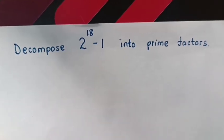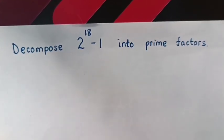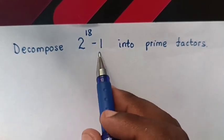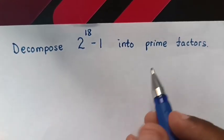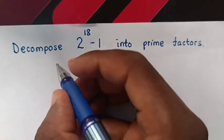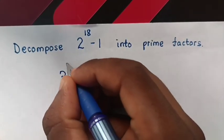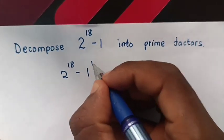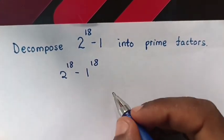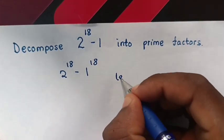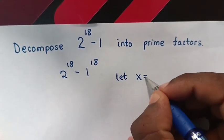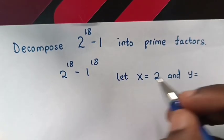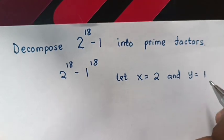Hello, how to solve this math problem which is asking: decompose 2 power 18 minus 1 into prime factors. So 2 power 18 minus 1 is the same as 1 power 18. We let x is equal to 2 and y is equal to 1.